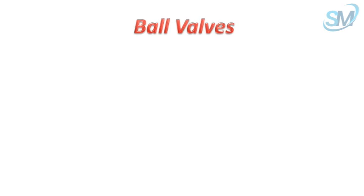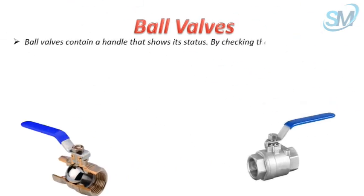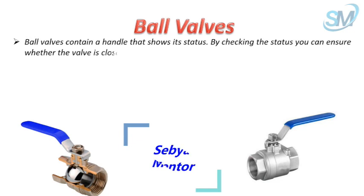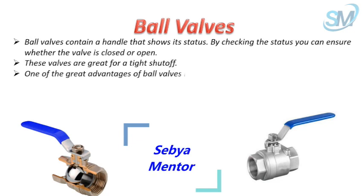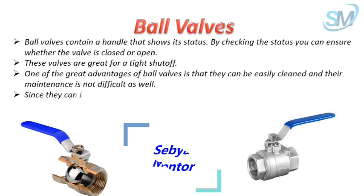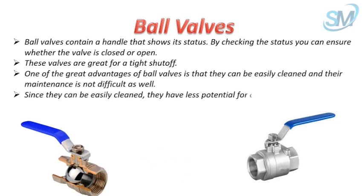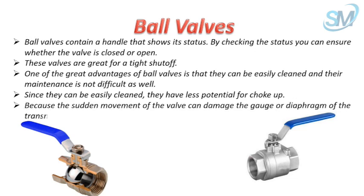Ball valves contain a handle that shows their status, allowing you to check whether the valve is closed or open. These valves are great for a tight shut-off. One advantage is that they can be easily cleaned and their maintenance is not difficult, giving them less potential for choke-up. Because sudden movement of the valve can damage the gauge or diaphragm of the transmitter, they should have a slow operation.